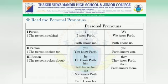Now let's read the personal pronouns and the examples given with them. First person — the person speaking: I (I know Parth), We (We know Parth), Me (Parth knows me), Us (Parth knows us). Second person — the person spoken to: You (You know Parth / Parth knows you). Third person — the person spoken about: He (He knows Parth), They (They know Parth), Him (Parth knows him), Them (Parth knows them), She (She knows Parth), Her (Parth knows her).